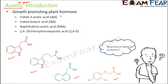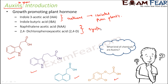Out of these, IAA and IBA are directly isolated from plants — so they are naturally occurring auxins. Whereas NAA and 2,4-D are synthetic auxins, meaning they are artificially prepared. They are prepared artificially for agricultural purposes, and that is why we need synthetic auxins.